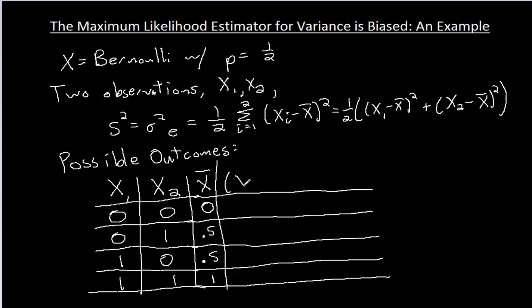Okay, so if I have (x1 minus x-bar)², then that's zero minus zero squared here. That's zero. Zero minus 0.5 squared, that's 0.25. One minus 0.5 squared, that's 0.25. And then one minus one squared is zero.